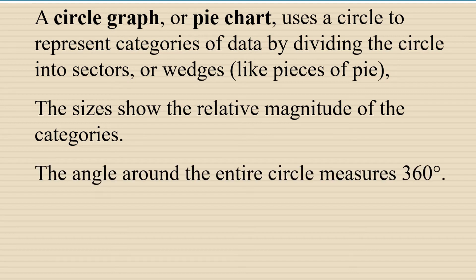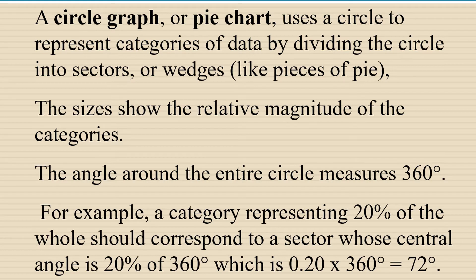The angle around the entire circle measures 360 degrees. For example, a category representing 20% of the whole should correspond to a sector whose central angle is 20% of 360.